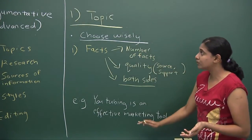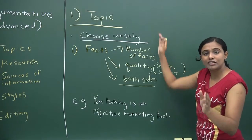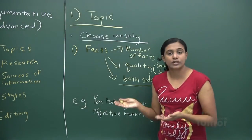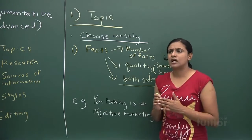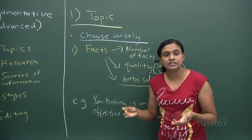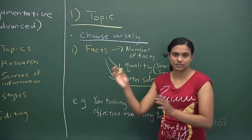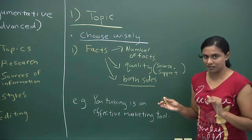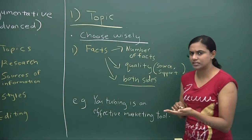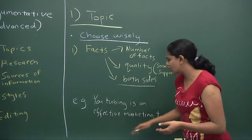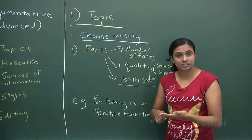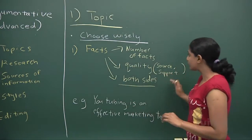The first step is done — you choose your topic wisely. When given a choice, like YouTubing is an effective marketing tool versus pollution due to human activities is out of control, think carefully. Make a mental checklist, or write it down on paper. Have a mind map and ask yourself how many facts you have. It also helps to actually write the facts down so you can decide. So let's come to the second part — research.